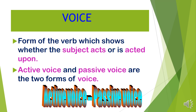In English grammar, verbs have five properties: voice, mood, tense, person and number. Here, we are concerned with voice. Voice is a form of the verb which shows whether the subject acts or is acted upon. Voice is divided into two types: active voice and passive voice.